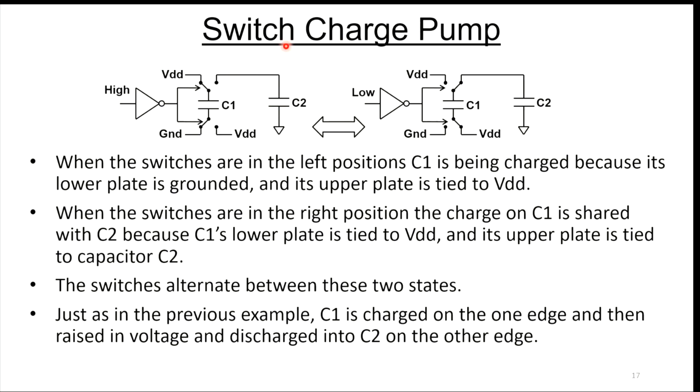When the switches are in the left position, you can see cap C1 is being charged because its bottom plate is connected to ground and its top plate is connected to VDD. Then you switch and that charged cap is connected to C2, but now its bottom plate is tied to VDD. Any charge on this cap is going to elevate the voltage on C2 higher than VDD. You flip back and forth between these two states. It works exactly the same as the diode charge pump. The advantage of the switches are you don't have the forward drop of diodes. You can probably run this thing at higher frequency because you can make the R on of the switches very low.